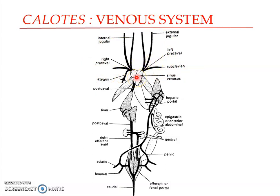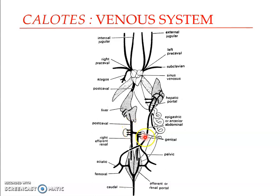The post-caval vein is formed by the fusion of several veins. You can see here the efferent renal veins — these two efferent renal veins join together to form the post-caval vein. The efferent renal veins drain blood from the kidneys. Each efferent renal vein receives genital veins from the gonads before they join together to form the post-caval vein.